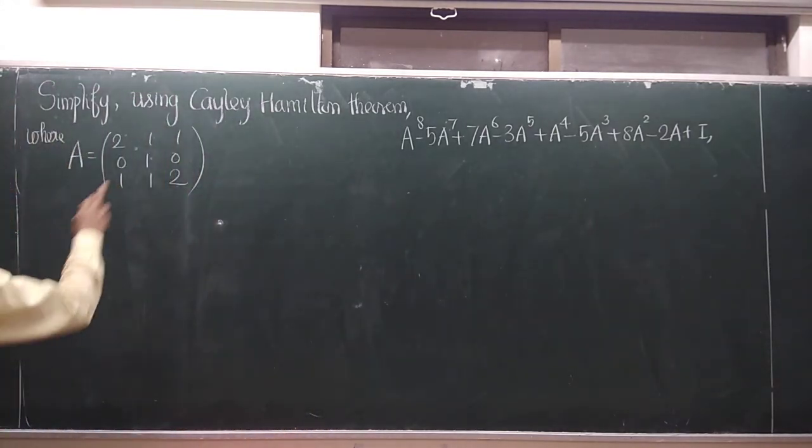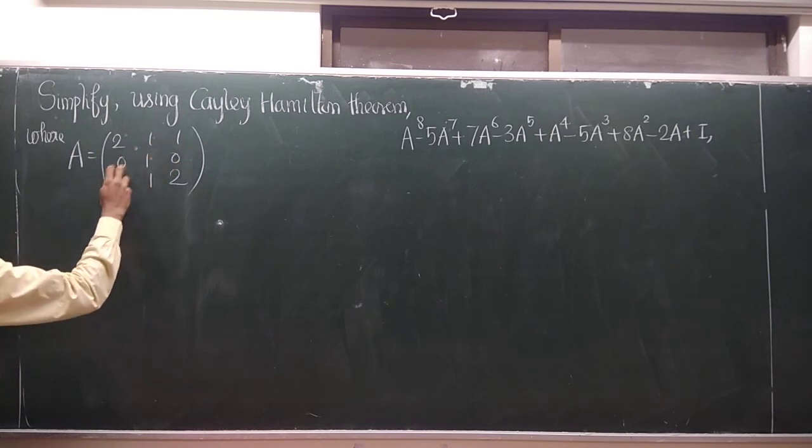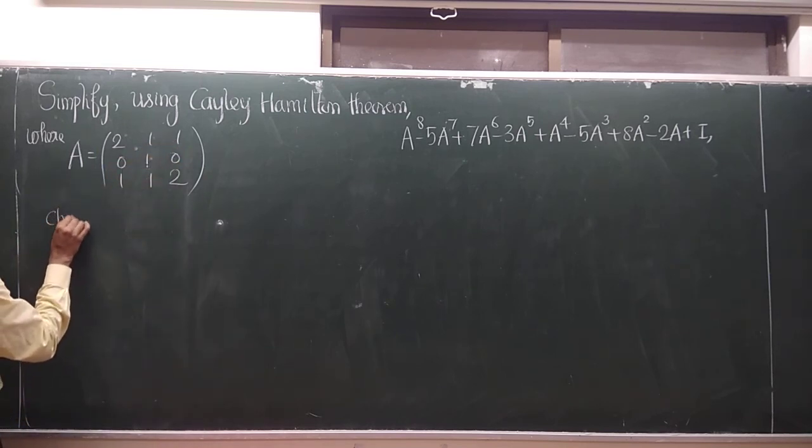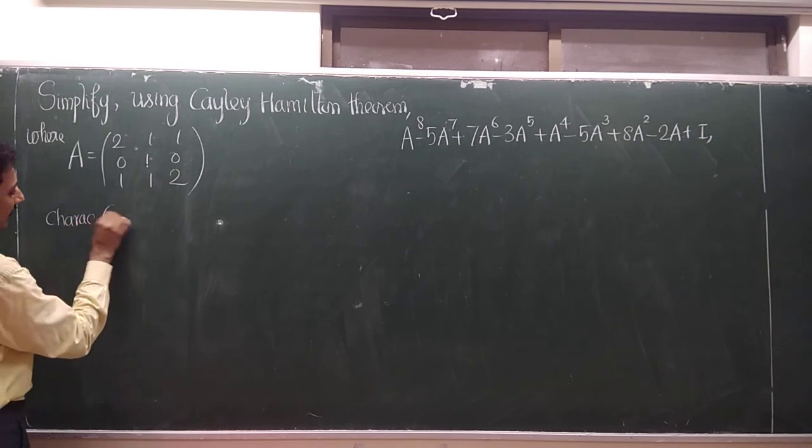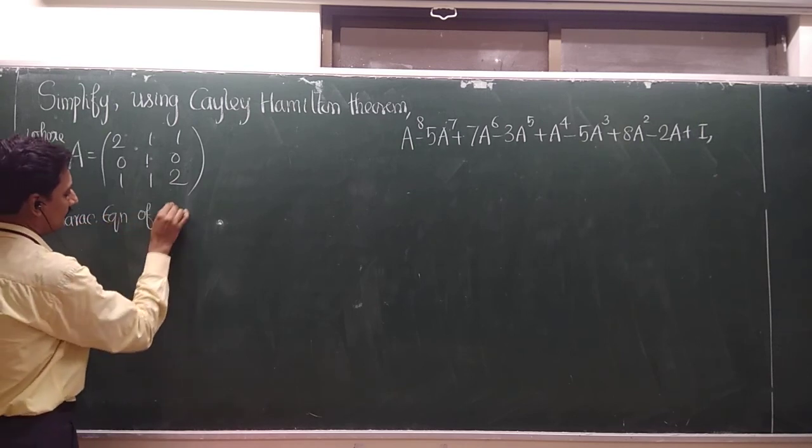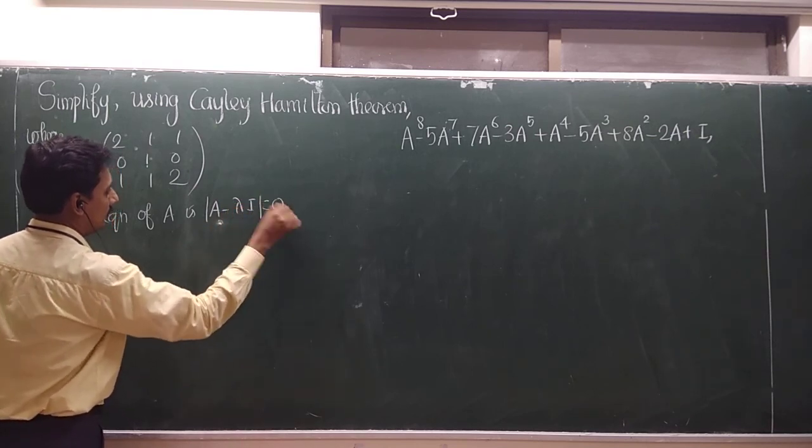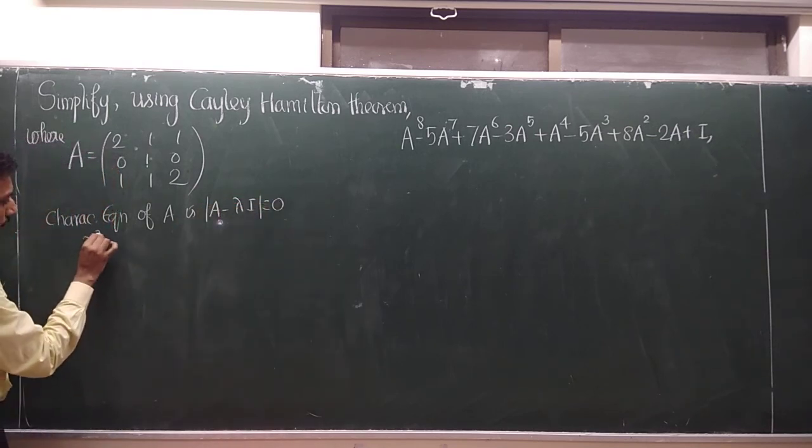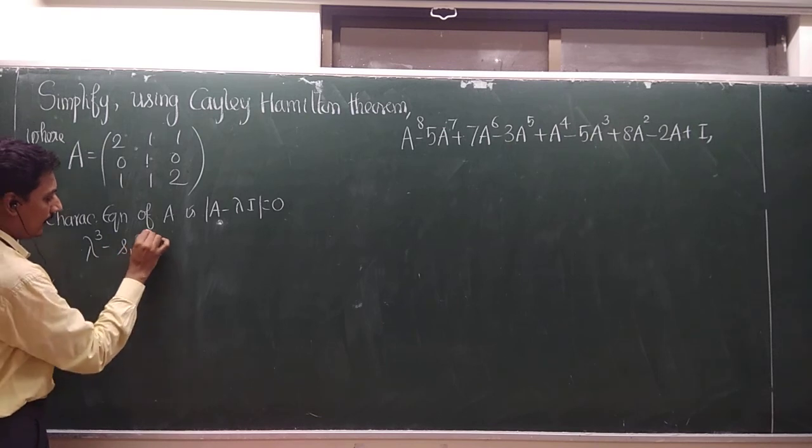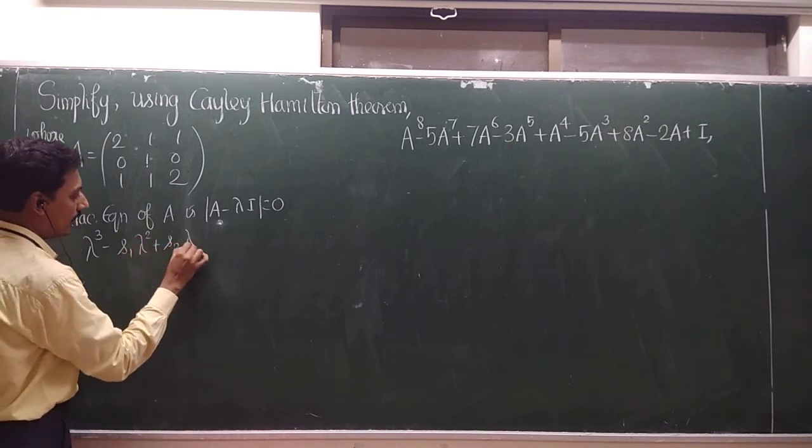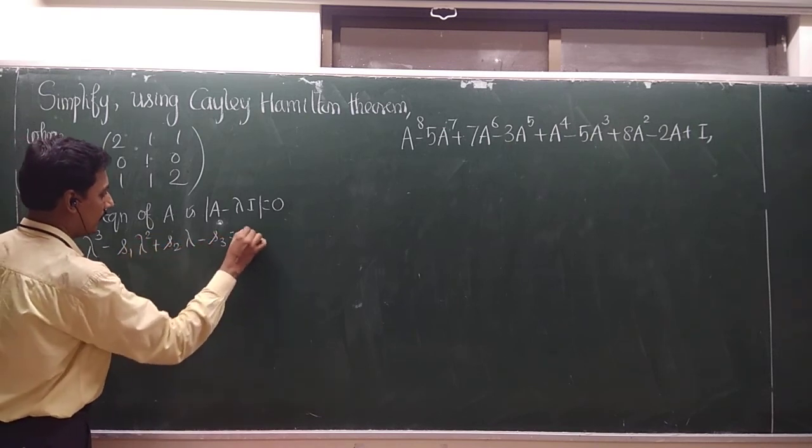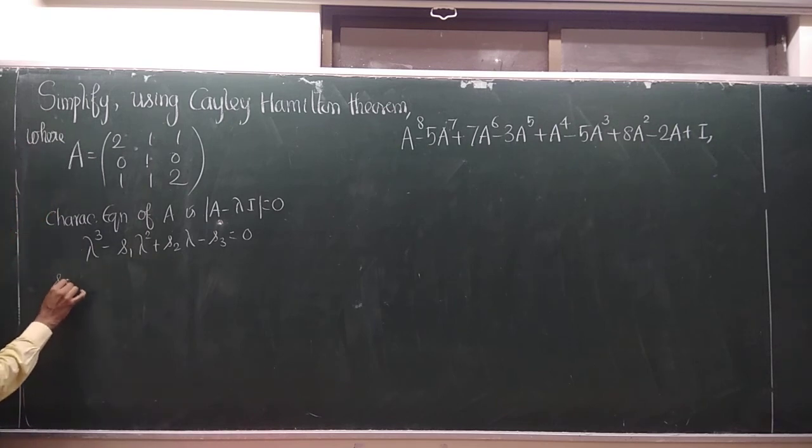A is of 3 by 3 matrix: 2, 1, 1, 0, 1, 0, 1, 1, 2. So what is the characteristic equation? The characteristic equation of A is determinant of A minus lambda I is equal to 0. So there is lambda cube minus S1 lambda square plus S2 lambda minus S3 equal to 0. So what about S1? Sum of the leading diagonals, 2 plus 1 plus 2 is equal to 5.